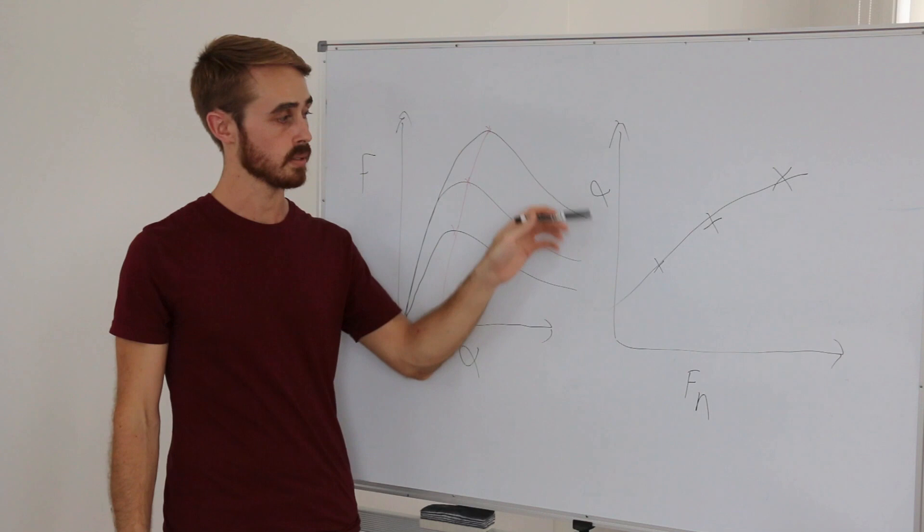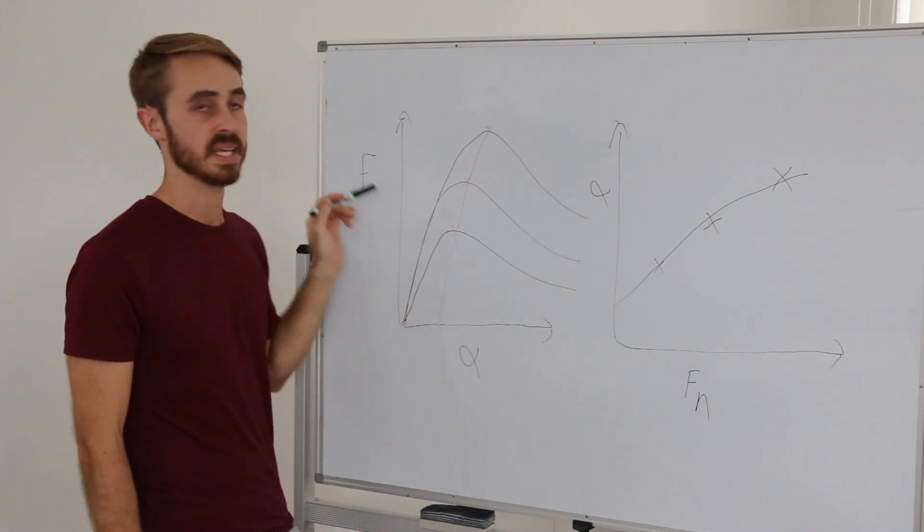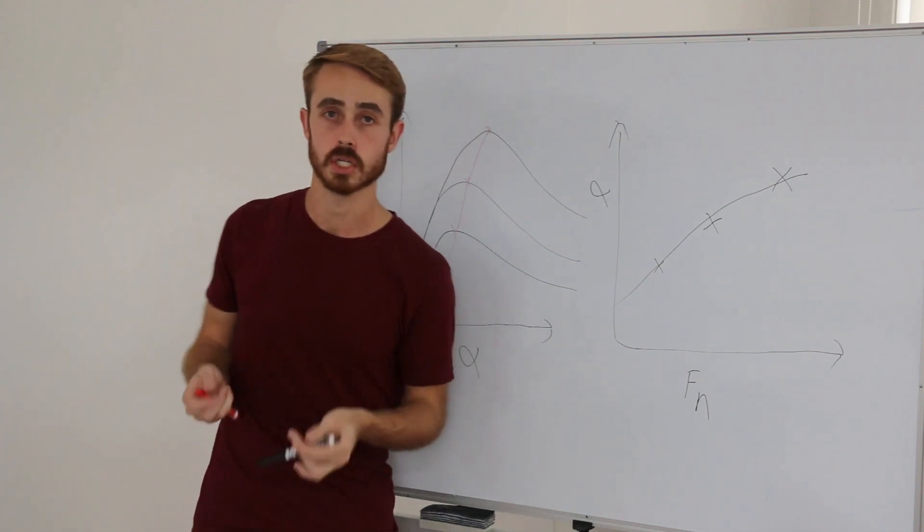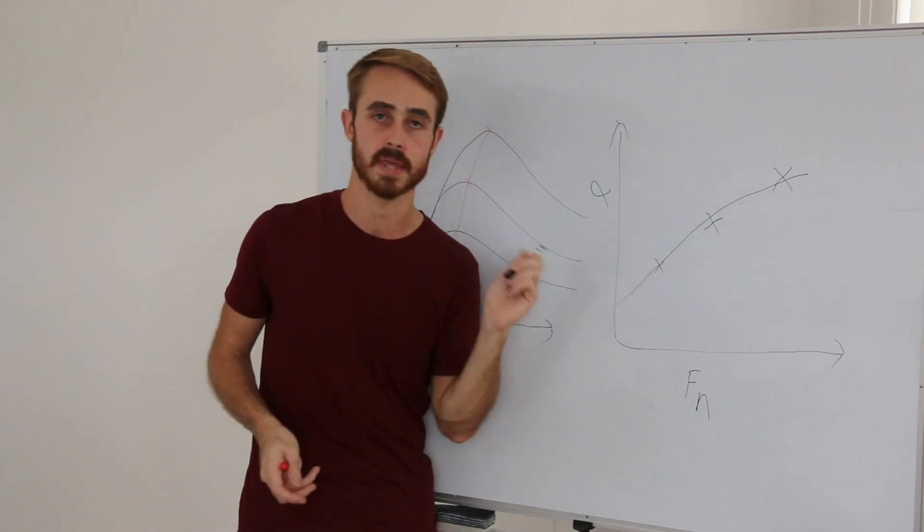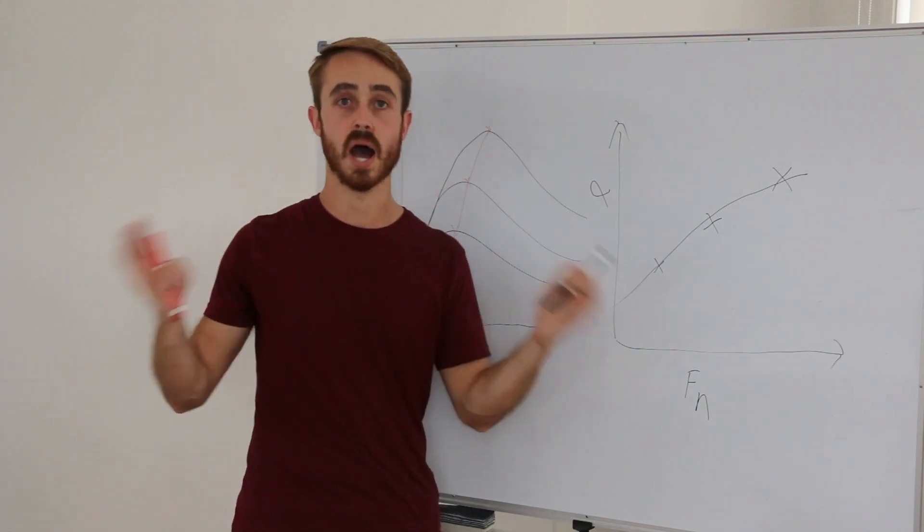Of course not only is the peak slip angle changing for the different normal loads but also the peak grip. The coefficient of friction is not constant like I was talking about with that load sensitivity and this is one of the reasons why people run wider tires.